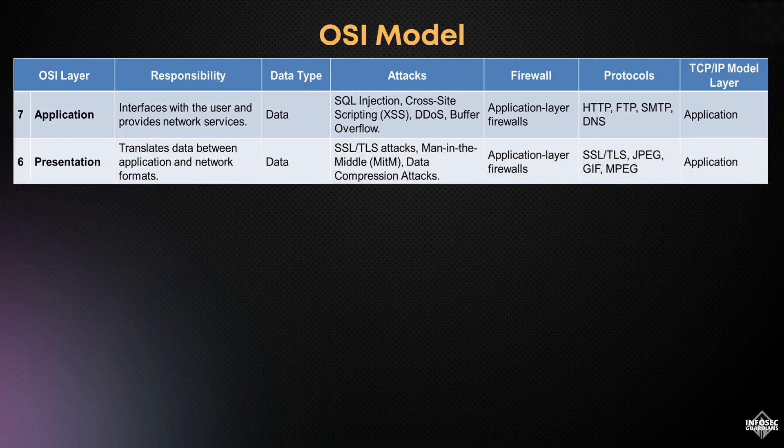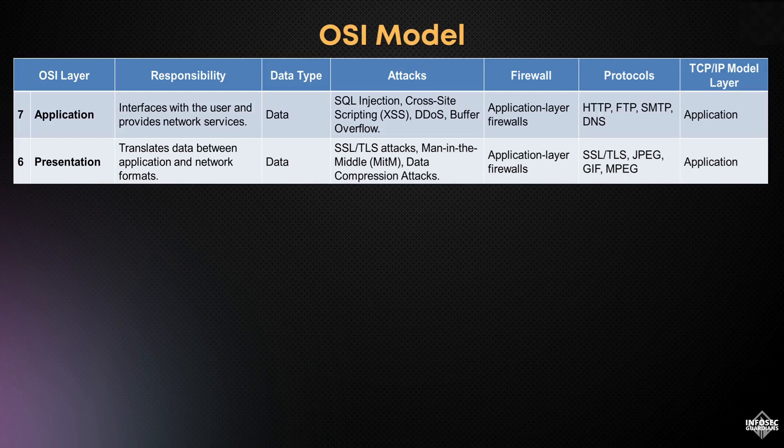Next, we have the presentation layer. This layer translates data between the application layer and the network, ensuring that information is presented in a readable format. It is also responsible for encryption and decryption. Attacks like SSL/TLS attacks and man-in-the-middle (MITM) can occur at this layer. Application layer firewalls continue to provide protection, while protocols like SSL/TLS and file formats like JPEG, GIF, and MPEG operate here.